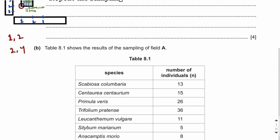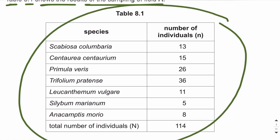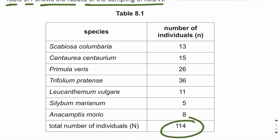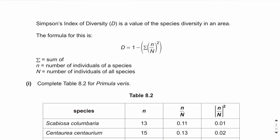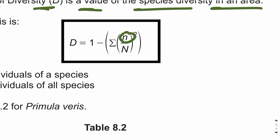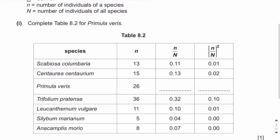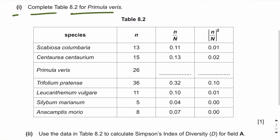That's enough for four marks. Moving on to part b. Table 8.1 shows the results of sampling of field A with a total number of individuals equal to 114, showing different species and their abundances. Simpson's index of diversity D gives an idea about the species diversity in a particular area. The formula is: D = 1 − Σ(n/N)², where n is the number of individuals of a particular species and N is the total number of all individuals of all species.